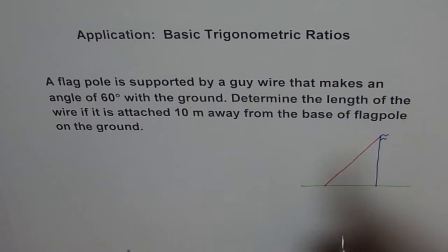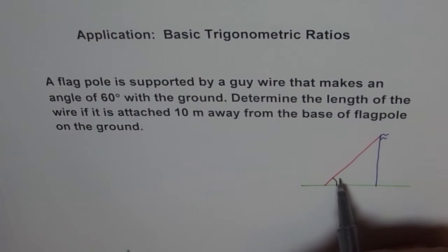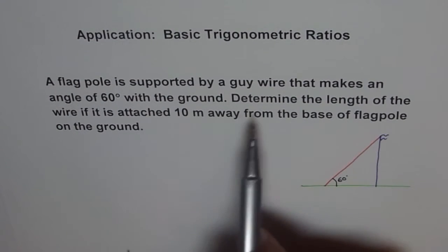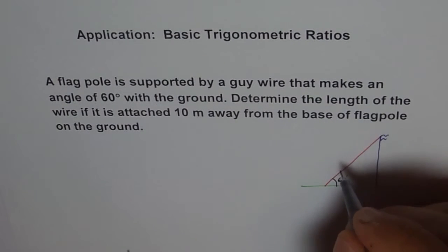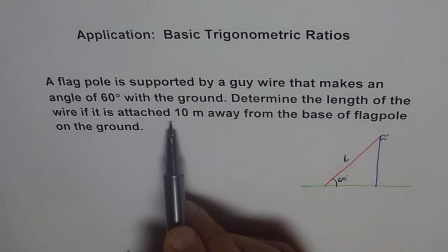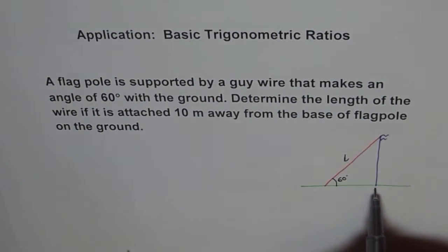Now, here, this angle is 60 degrees. Determine the length of the wire. Let's say the length of the wire is L. If it is attached 10 meters away from the base, let's say this is my base and here it is attached. This point is A and that is 10 meters away. This is 10. Now, this is the situation and we need to find the length of the wire.